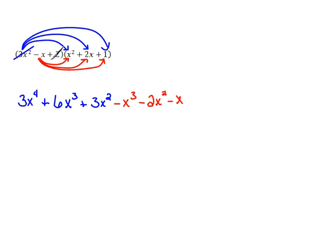Now we've distributed the negative x. Let's now move forward to distributing the 2. I'm going to do that in a third color so you can see that. 2 times x squared would be a plus 2x squared. And 2 times 2x would be a plus 4x. And 2 times a positive 1 would be a plus 2.